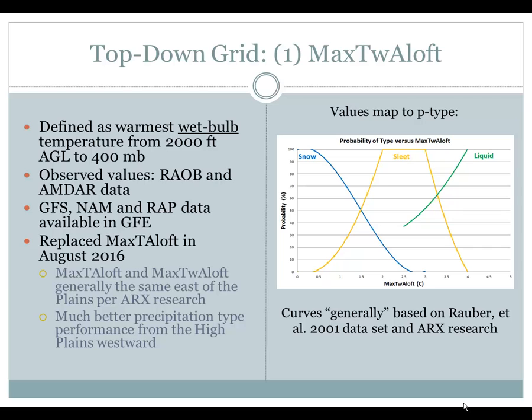On the right you will see how values of Max Wet Bulb Aloft correspond to probabilities. If you have a Max Wet Bulb Aloft of 0 to 1 Celsius, you are looking at mainly snow. As you go to 2 to 3 Celsius on Max Wet Bulb Aloft, you are looking at sleet. And then at 4 Celsius, you are looking at liquid.